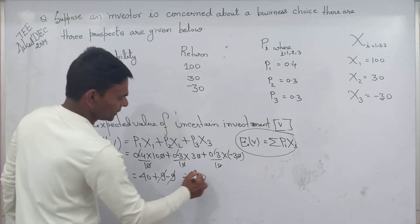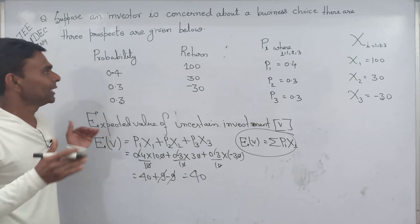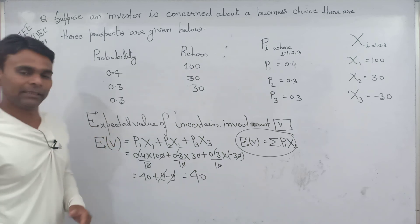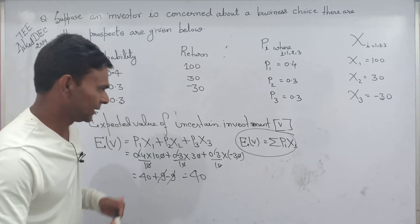The expected value is 40. So this is the expected value of uncertain investment.